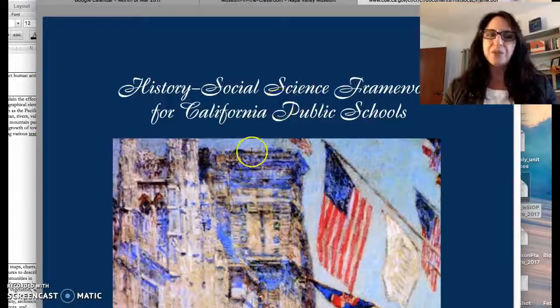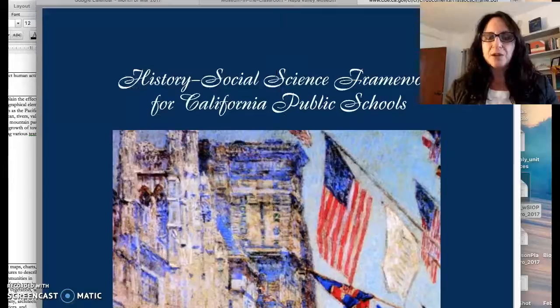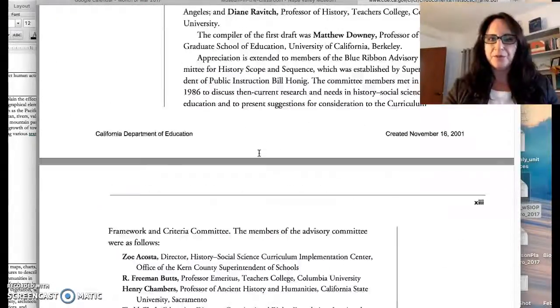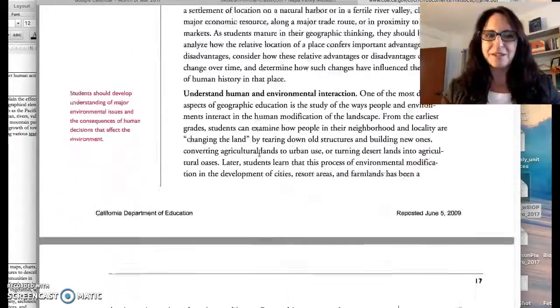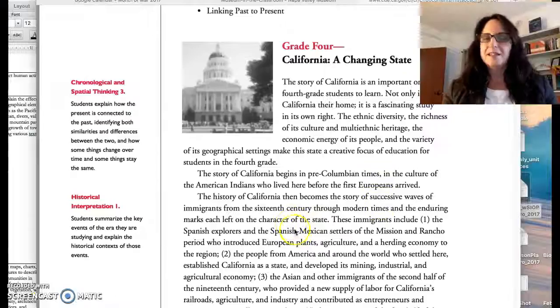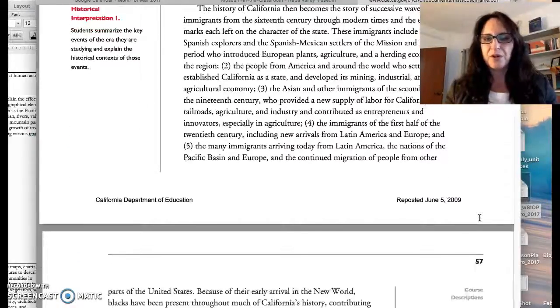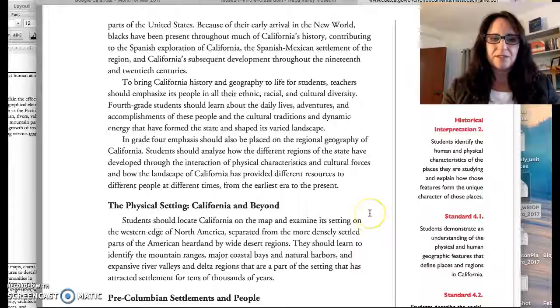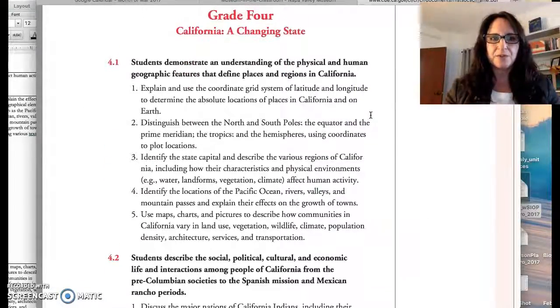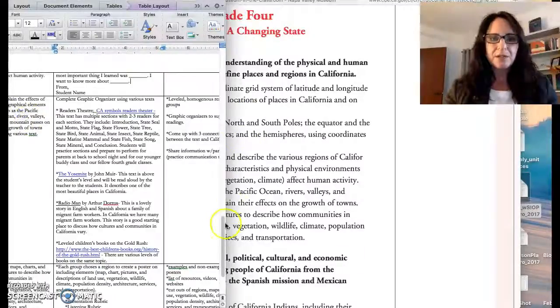I teach fourth grade, so I've just pulled up for this example the social studies framework, social sciences framework for California public schools. You can go through and I've skipped to grade four. Grade four is about California, a changing state. Now I've skipped even further down and it goes through and gives you a little narrative about the expectations of grade four in California. We've got the physical settings, exploration, and then they give you the actual standards. Here's standard 4.1 and you can see that there's five sections to standard 4.1. That's where I started in my unit plan.